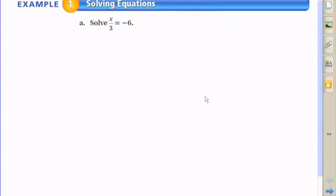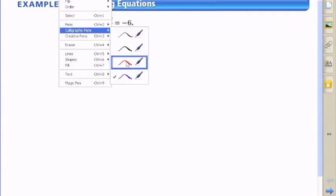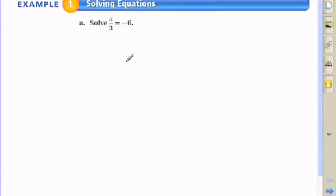So now we're going to learn how to use multiplication to solve equations. In this equation, it's x divided by 3 equals negative 6. In other words, what number divided by 3 equals negative 6.